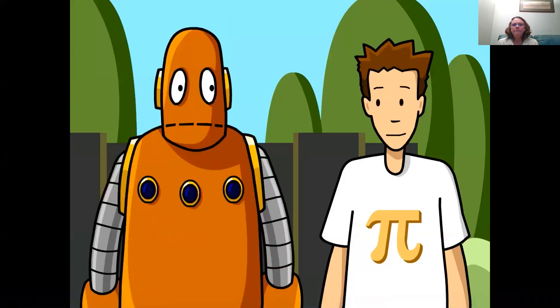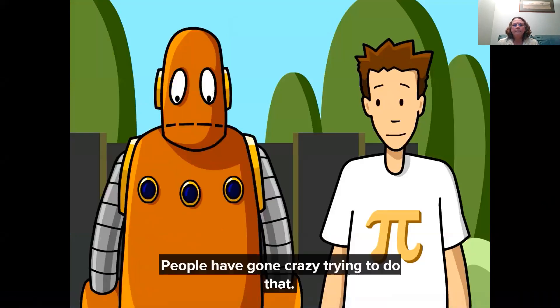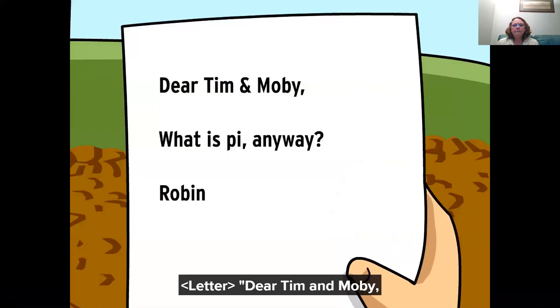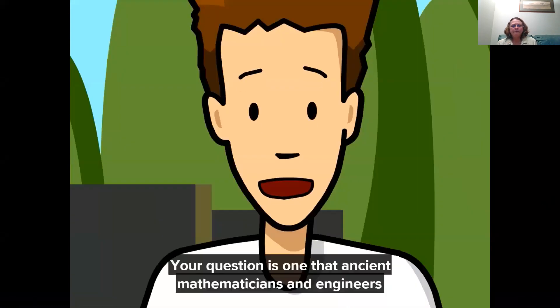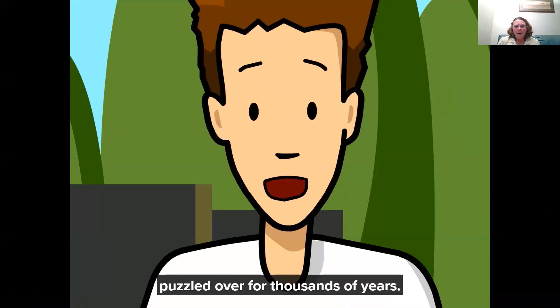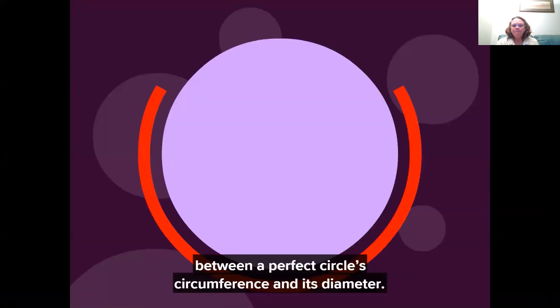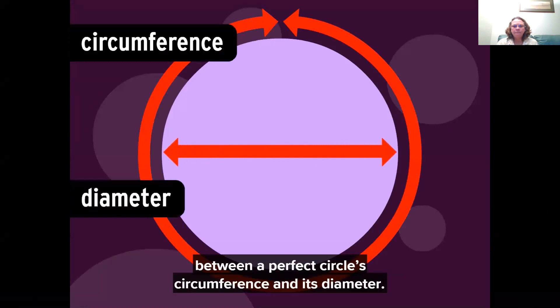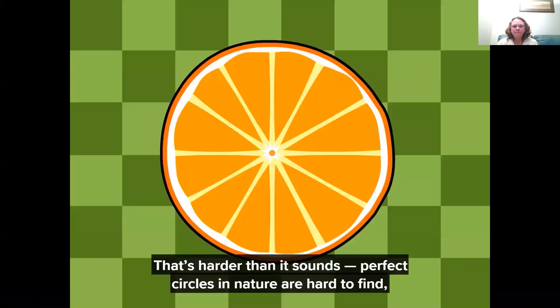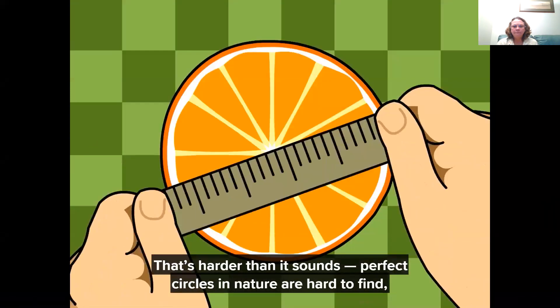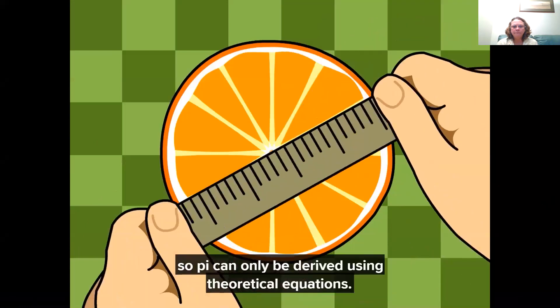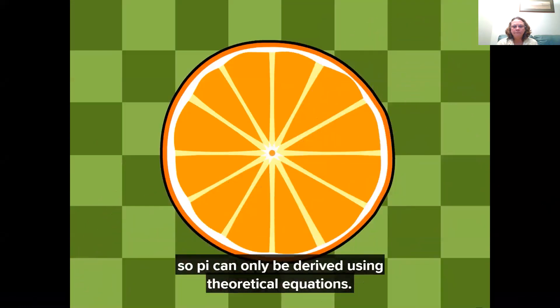You'll never get a perfect circle. People have gone crazy trying to do that. Dear Tim and Moby, what is Pi anyway? From Robin. Your question is one that ancient mathematicians and engineers puzzled over for thousands of years. They wanted to find the relationship between a perfect circle's circumference and its diameter. That's harder than it sounds. Perfect circles in nature are hard to find so Pi can only be derived using theoretical equations.